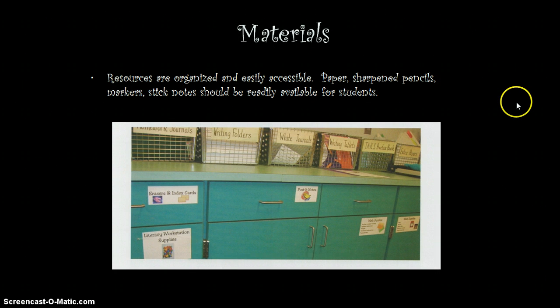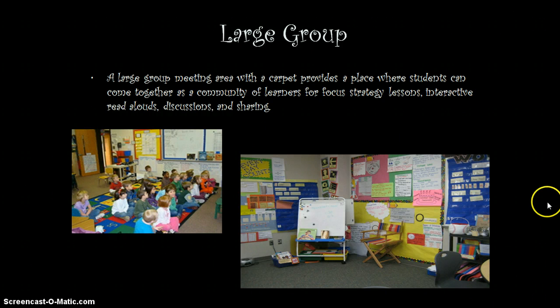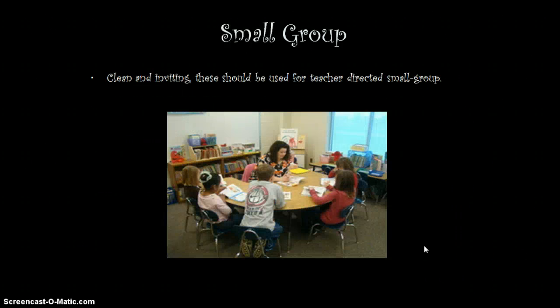Make sure your materials are always organized neatly and very accessible to students — sharpened pencils, papers, things that kids really need to have readily available. Make sure you have a gathering place for your students for large and small groups. In the lower grades, you want to have a carpet where students can come together. In the upper grades, make sure you can pull your kids together on the floor to focus on strategy lessons and make it interactive for read alouds, discussion, and sharing. Your small group area should be clean and inviting so that you are not always moving things around — it's ready to go. You have all of your materials and the students have their materials as well.